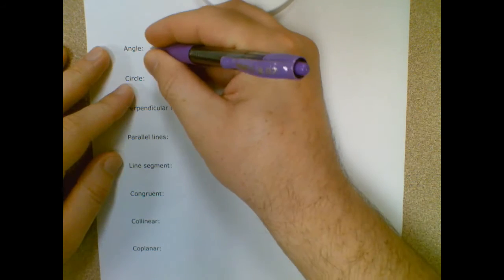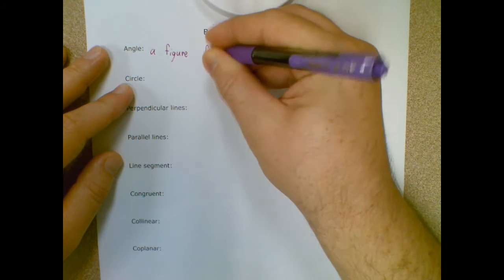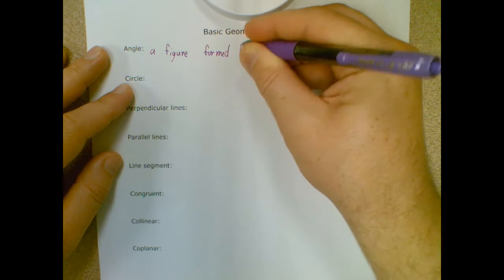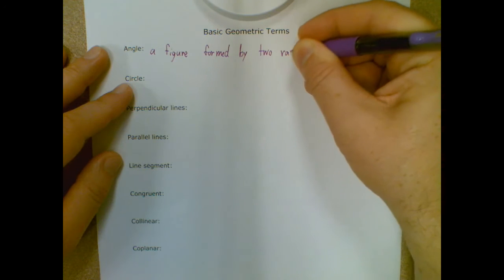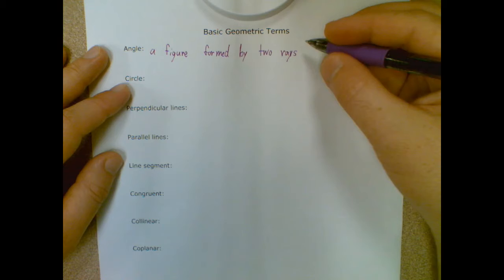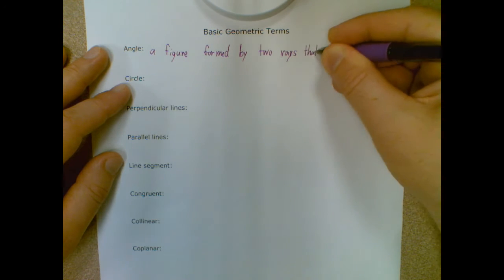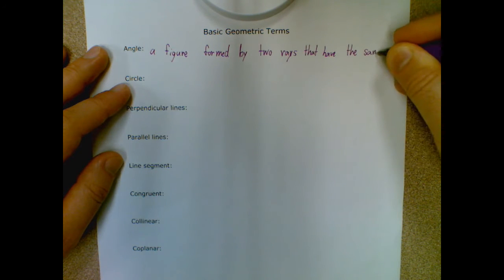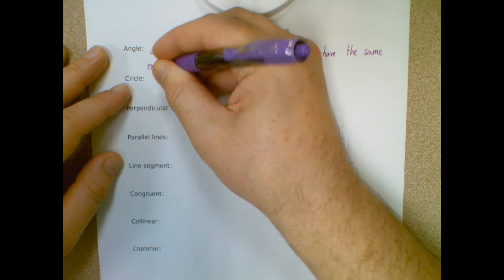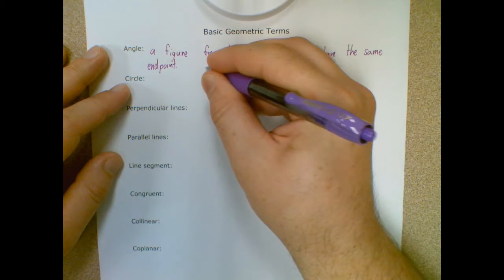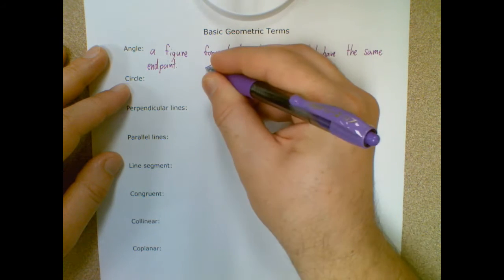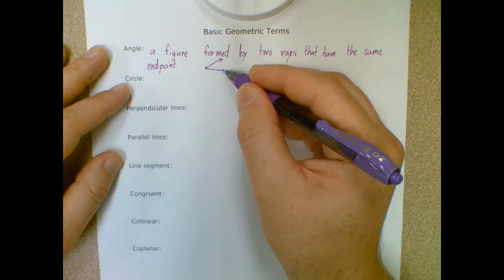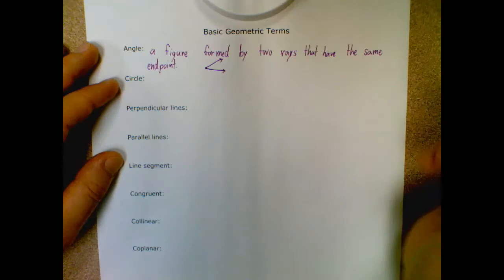So jumping right in: an angle is a figure formed by two rays that have the same endpoint. So that's why we're going to be talking about how those sides are rays. What that means is you're going to have a ray like this, and the endpoint is this one. If I have another ray that starts there, this entire shape is the angle — not just that point, which is often confused.